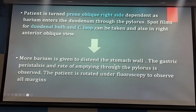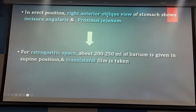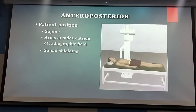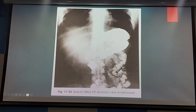More barium is given into the stomach wall. Gastric peristalsis and the rate of emptying through the pylorus are assessed — gastric transit time is also important. In the erect position, right anterior oblique of the stomach shows the incisura angularis and proximal duodenum. Incisura angularis means the angular notch at the end of the stomach — here is the pylorus, then the duodenum.